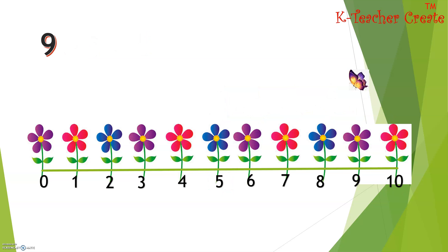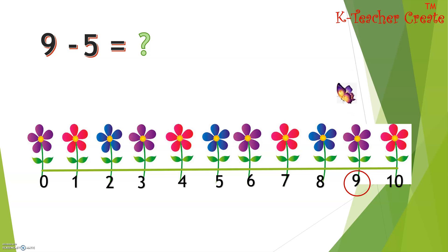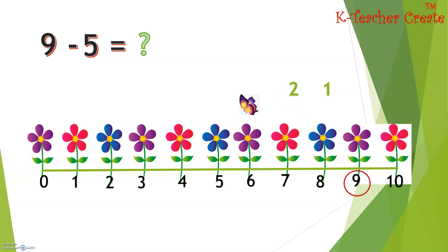Nine minus five equals. Circle number nine and count backwards five times: one, two, three.